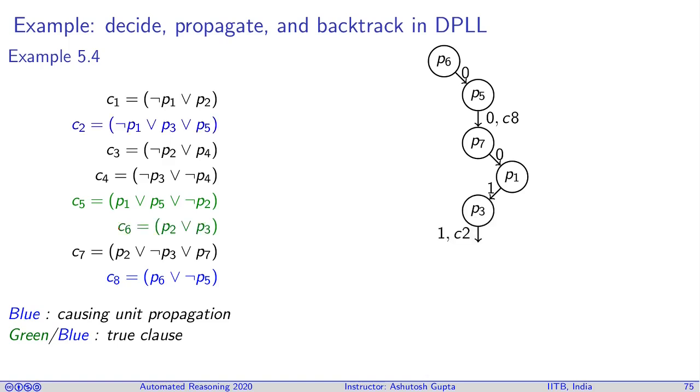Do we have a unit propagation anywhere? So what happens is that look at c2. In c2 we have p1 which was already set to 1. So this has become false. p3 was not false, but p5 was already set to false. Therefore this guy has become a unit literal. Therefore I have to set it to one. So now these clauses are becoming true. So we don't have to worry about the true clauses anymore. The clauses which are not true yet we have to think about them. So there are four clauses.